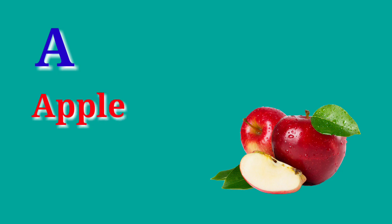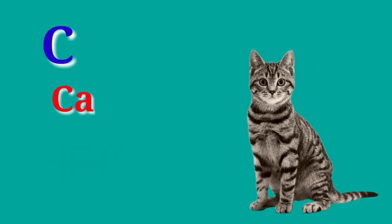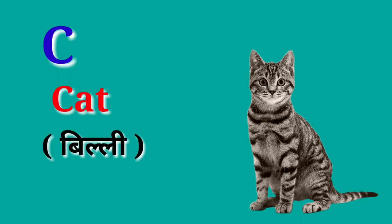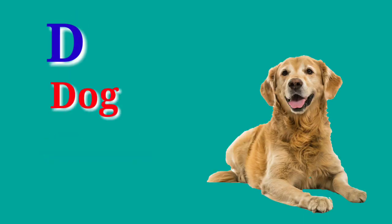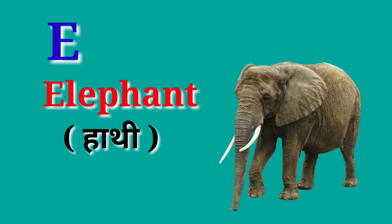A for apple, apple means save. B for ball, ball means gain. C for cat, cat means billy. D for dog, dog means kutta. E for elephant, elephant means hearthi.